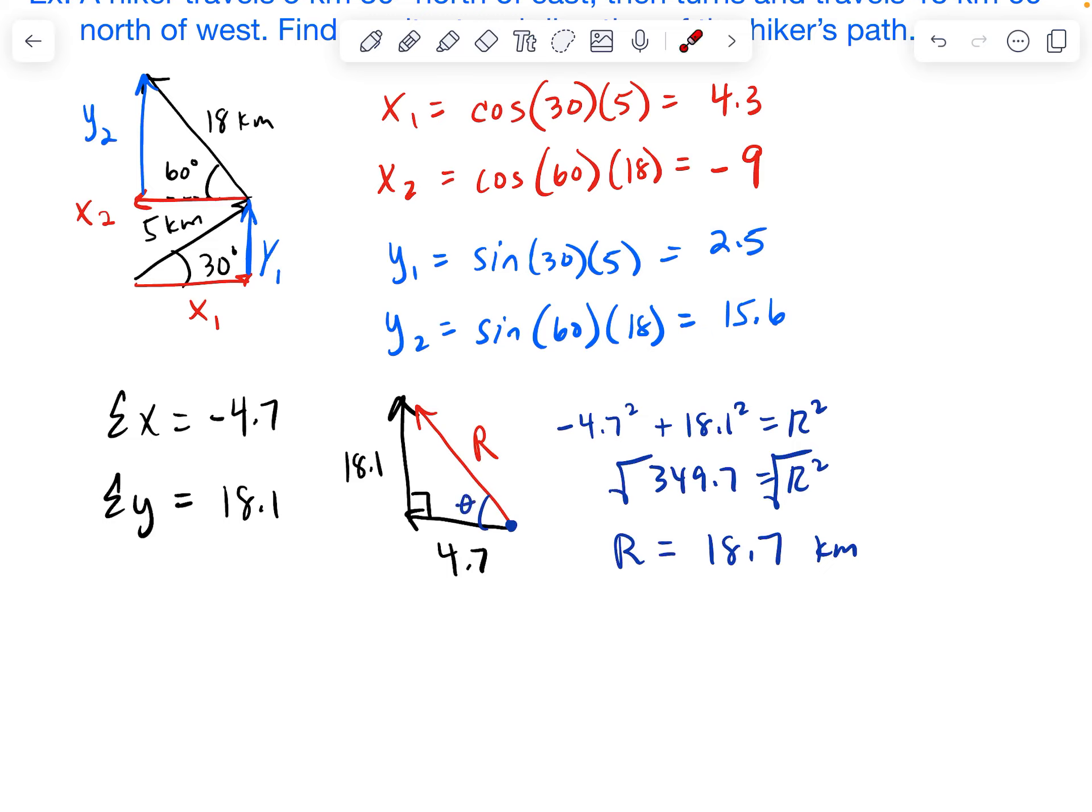Since I already know my opposite side and my adjacent side to this angle, I prefer to use tangent. And if we're trying to find the angle, we actually have to do the inverse. So theta here is going to equal the inverse tangent of opposite, which is 18.1, over the adjacent, 4.7.